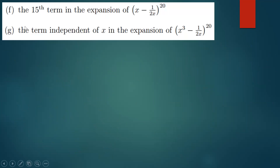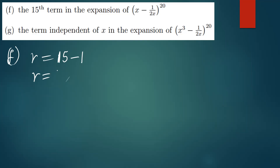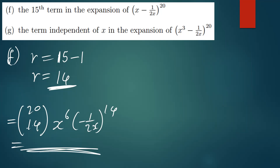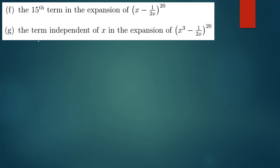Part F asks for the 15th term, which is straightforward. For the nth term, r equals n minus 1, so for the 15th term r equals 14. You say 20 choose 14, then x raised to the power 20 minus 14, which is 6, then b is negative 1 over 2x raised to the power 14. It's as simple as that — just simplify the expression to get the answer.